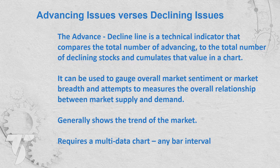Generally the advance-decline line and the Arms Index were based on all the stocks in the New York Stock Exchange — those are very common symbols you can find on any platform. What makes TradeStation unique is that we give you that same data in a lot of different ways. You can look at it for all stocks in the US, just stocks on NASDAQ, or even unique indexes. I can look at that advance-decline line on the S&P 500, NASDAQ 100, Russell 2000, or Dow 30. TradeStation really takes this analysis to the next level.